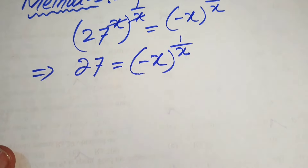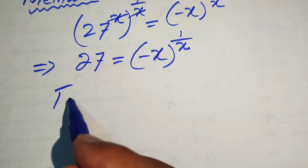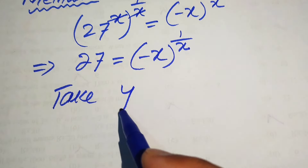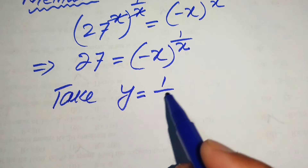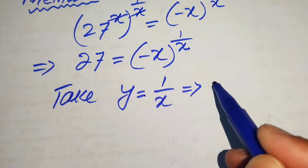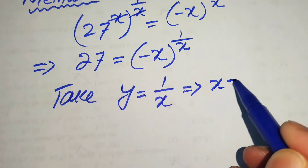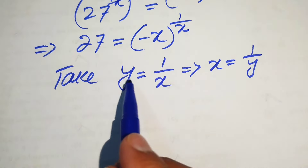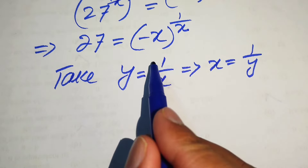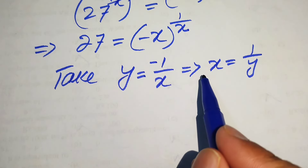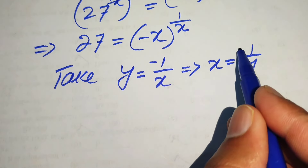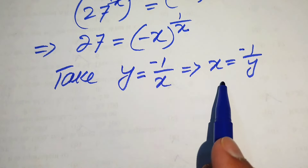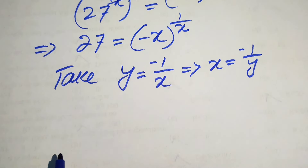Now we need a substitution. We take y equals minus 1 over x, which implies x equals minus 1 over y. We substitute these two values into the above equation.